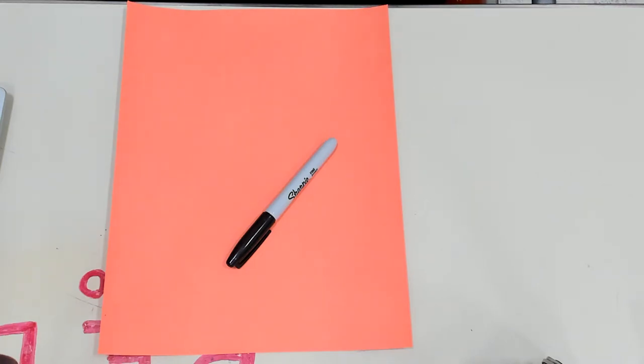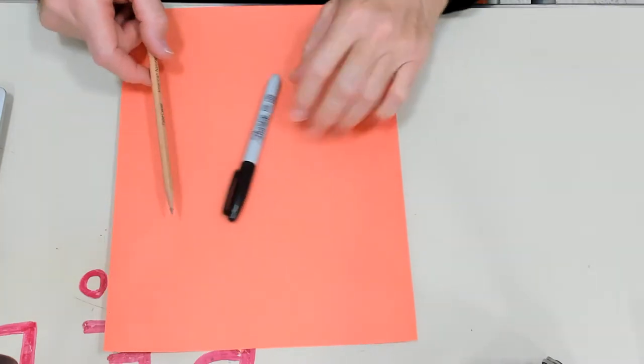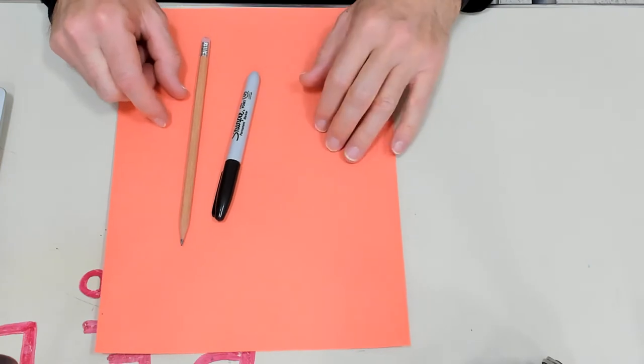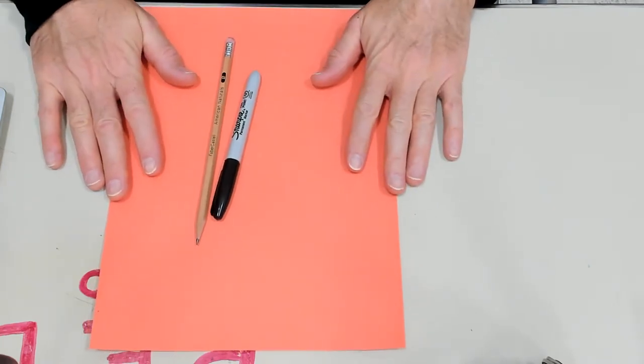Today we're going to make a symmetrical spider. You're going to need a pencil, sharpie, and a piece of colorful paper, not black,